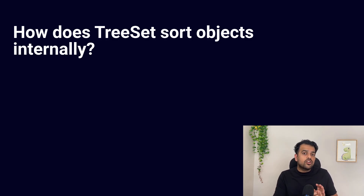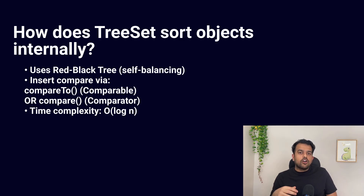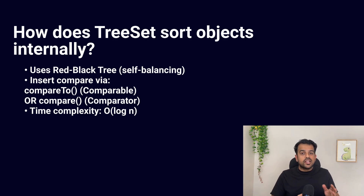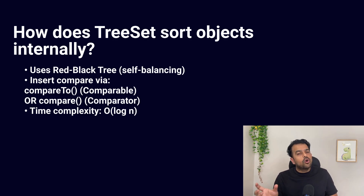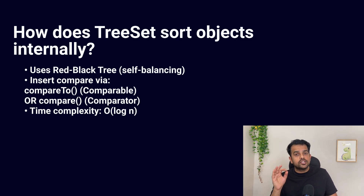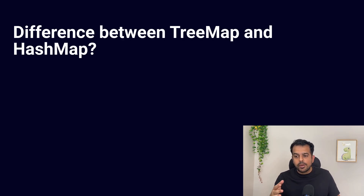The next question: how does TreeSet sort objects? TreeSet does not use a hash table — it stores elements using a red-black tree internally, which is a self-balancing tree. When you add an object, Java compares it with existing nodes using the compareTo() method if the object implements Comparable. If you pass a Comparator while creating the set, it uses the compare() method instead. The tree automatically balances itself as objects are inserted, and because of the balanced tree structure, add, remove, and search all run in O(log n). Important: for sorting to work, the object must provide comparison logic either via Comparable or Comparator.